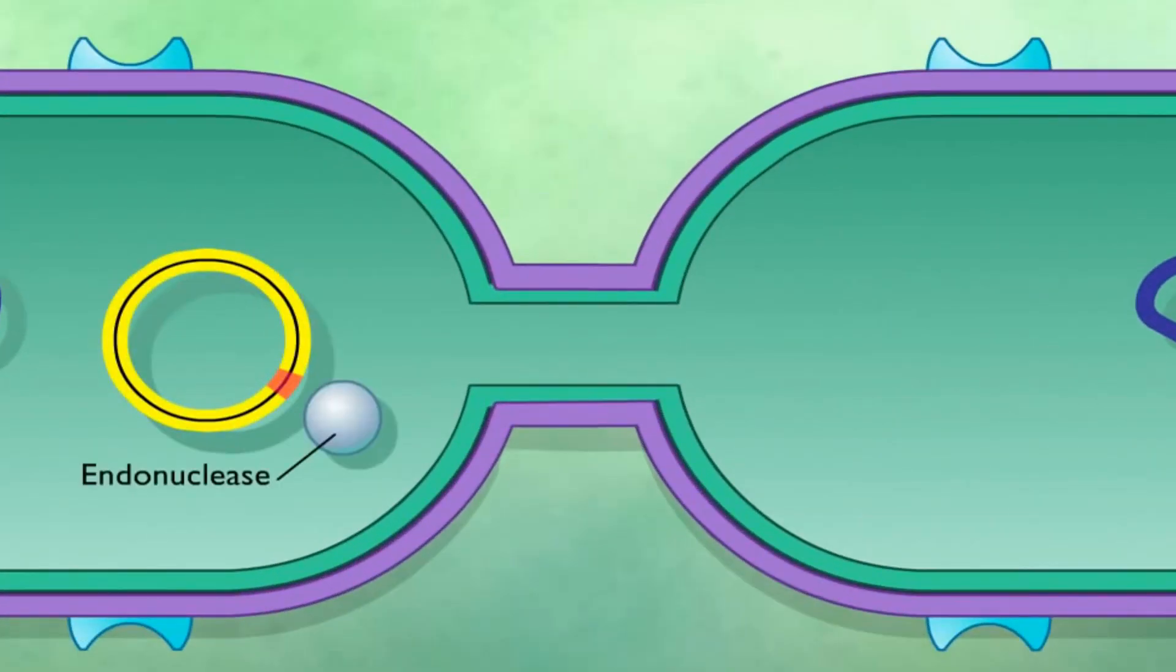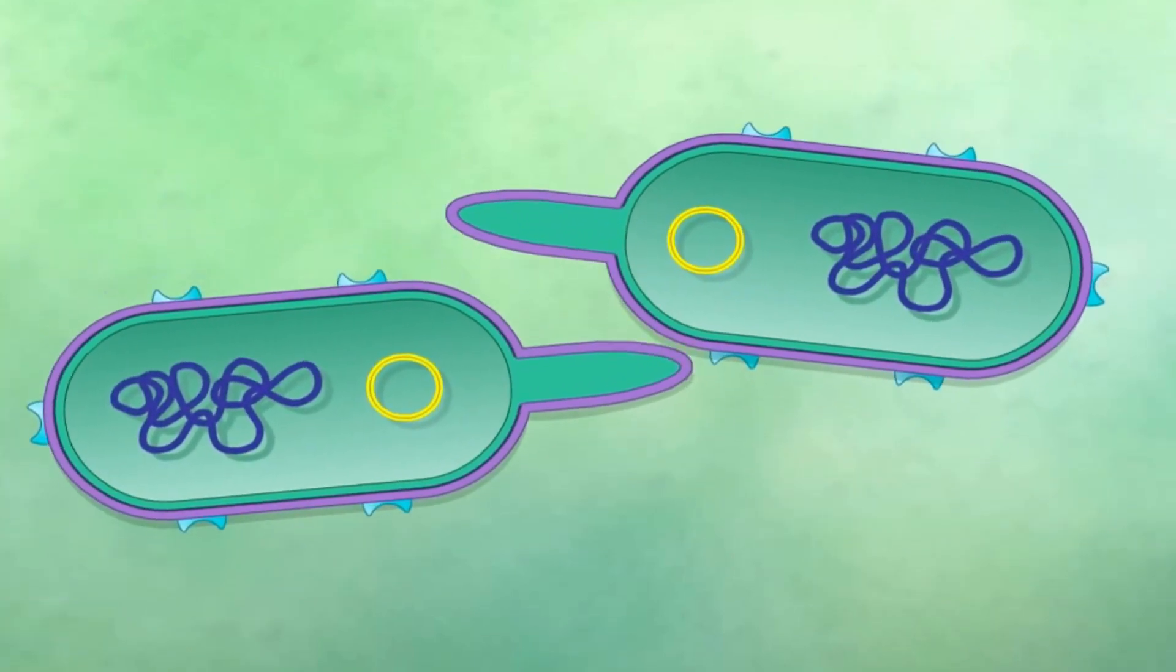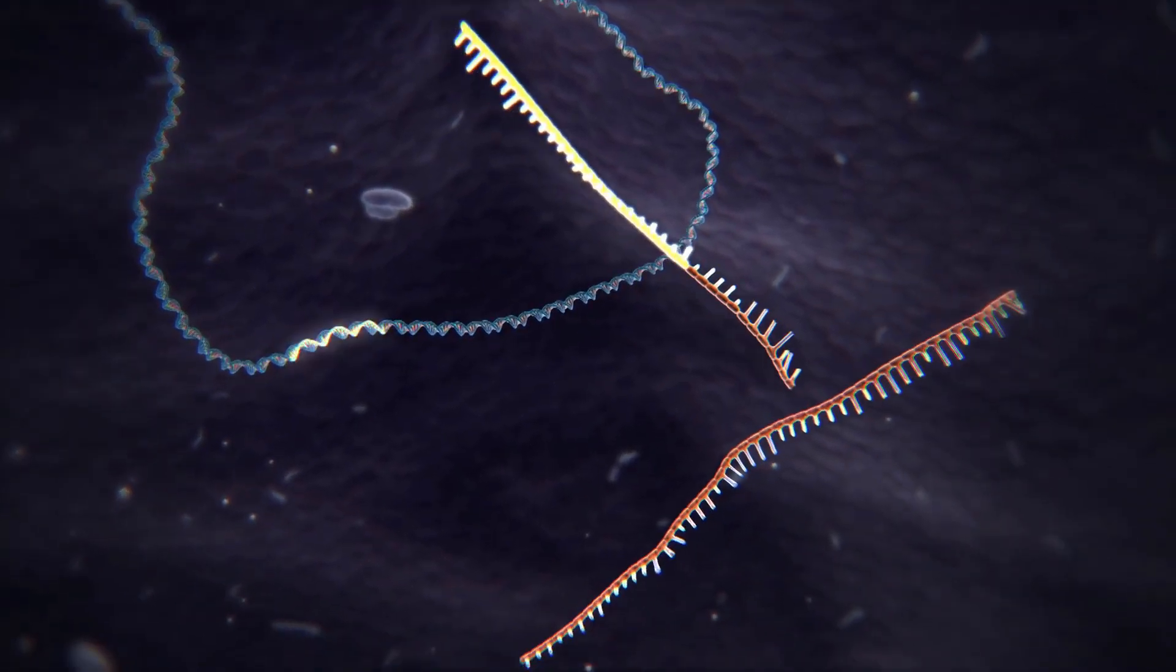But also, in a process known as conjugation, two bacteria cells will go up next to each other, and they will exchange genetic information. When this happens, the resistance to a virus can be passed along to the other bacteria, and now they're both resistant to the virus. Anyhow, so with that, how do they get that?